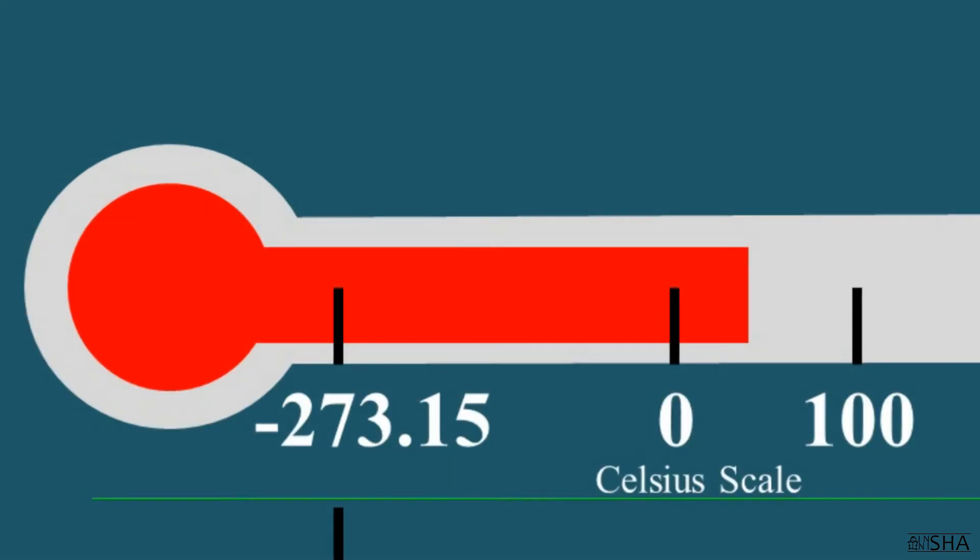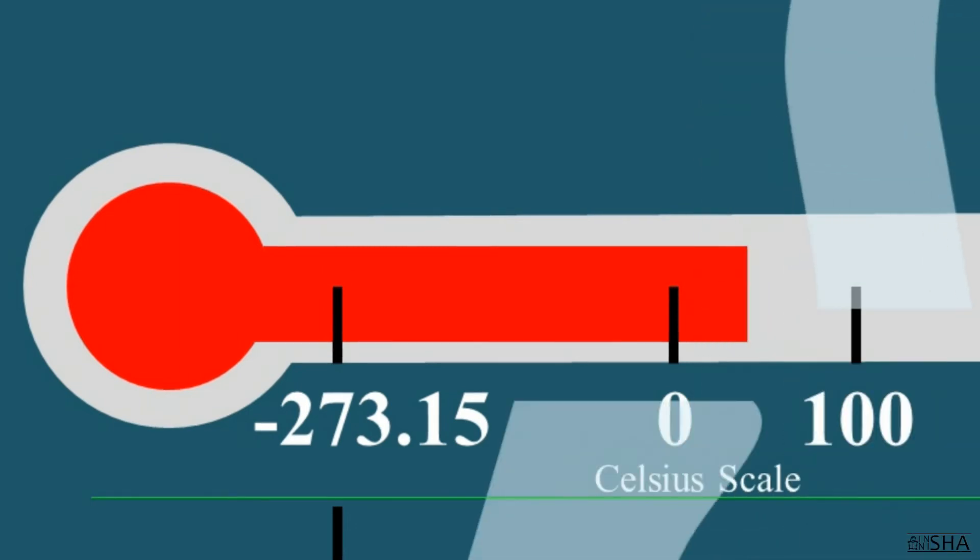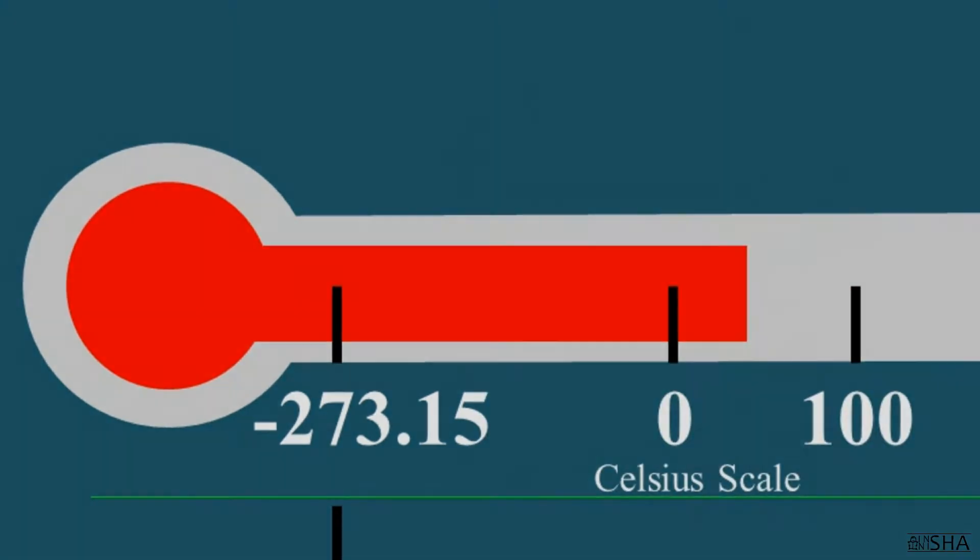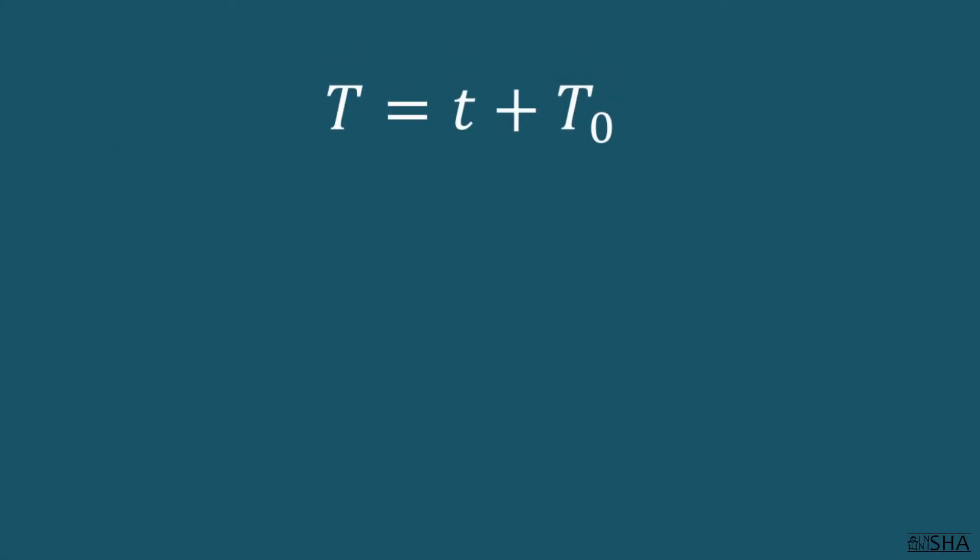Now let's look at the Celsius scale. Zero is the freezing point of water, and 100 degrees is the boiling point of water. To convert Kelvin to Celsius and vice versa, you need to remember this formula.